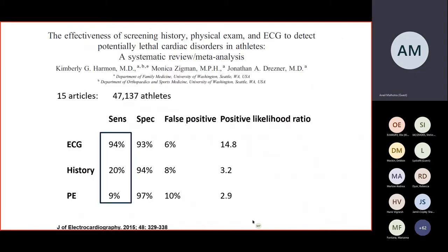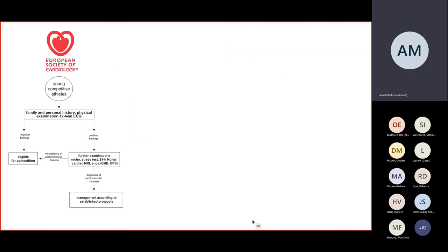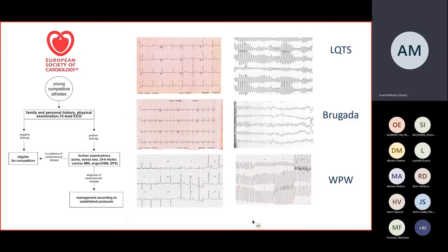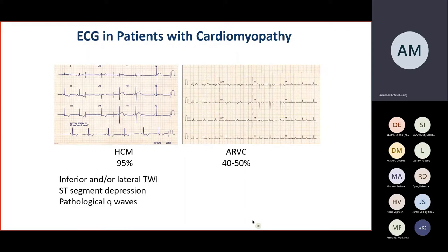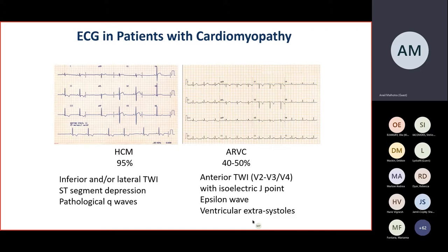The ECG has actually been found to be the most sensitive tool at detecting conditions associated with sudden cardiac death — as high as 94% from a large meta-analysis by Kimberley Harmon's group. The ECG also has a high specificity and good positive predictive value. As such, the ECG does endorse a protocol with history, examination, and an ECG when evaluating athletic individuals — with most electrical conditions detected from this, as well as high sensitivity for common cardiomyopathies, namely hypertrophic cardiomyopathy and arrhythmogenic right ventricular cardiomyopathy. The most common finding is abnormal T-wave inversion.